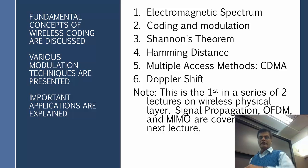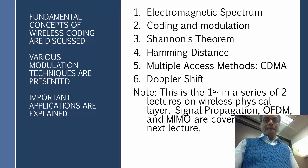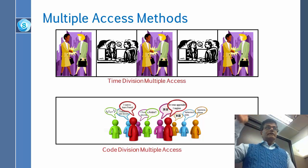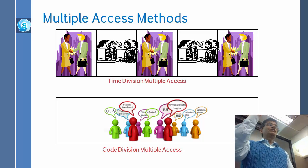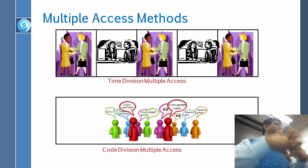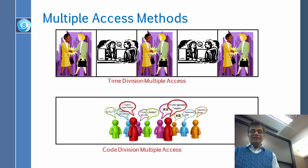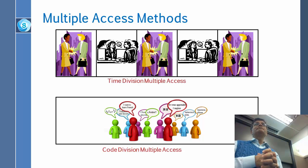I am changing the topic to access method. Here is the problem, particularly from the wireless point of view, because the medium is one. There is only one air here, and if I speak, you speak, they speak, they are all going to interfere. So, there are several ways to share this medium.